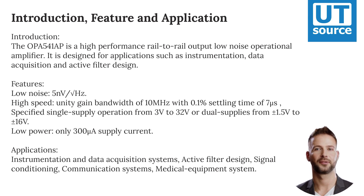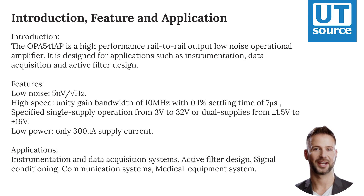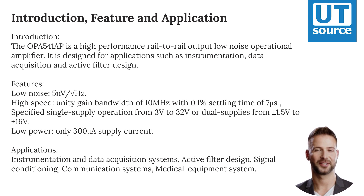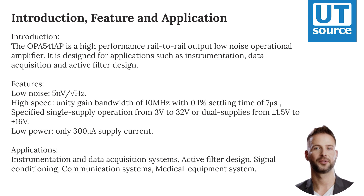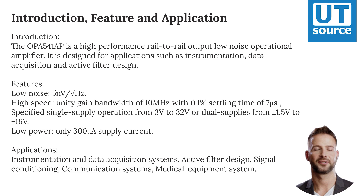Features: Low noise — 5 nV per root hertz. High speed — unity gain bandwidth of 10 MHz with 0.1% settling time of 7 microseconds. Specified single-supply operation from 3 V to 32 V, or dual supplies from plus or minus 1.5 V to plus or minus 16 V.